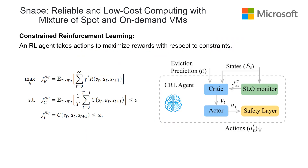We use constrained reinforcement learning to make decisions, where an agent takes actions to maximize rewards subject to two constraints. The first is a cumulative constraint, where the SLO of the VMSG should not be violated from start time to current time. The second is an instantaneous constraint, which constrains the number of in-service VMs to not drop below a certain value. We use an actor-critic framework to train the RL agent, and we have a safety layer at the end to filter out bad actions.